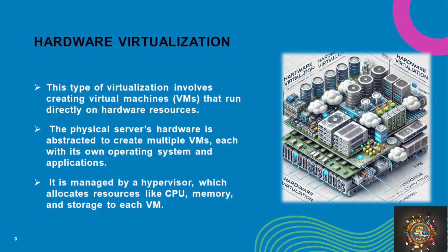First, Hardware Virtualization. In hardware virtualization, we are going to apply it to the major CPU, memory, and storage. This type of virtualization involves creating virtual machines that run directly on hardware resources. We will create different virtual machines. We use a hypervisor — the software used to manage and run virtual machines on the hardware.